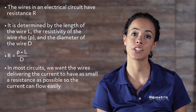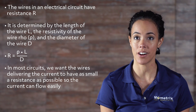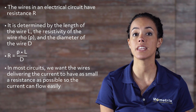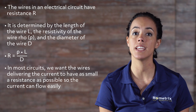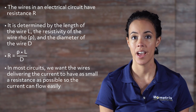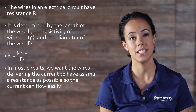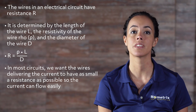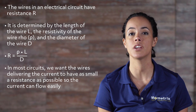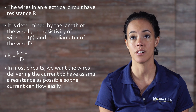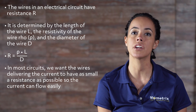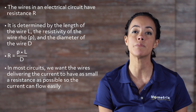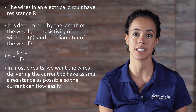The wires in an electrical circuit have resistance, R. It is determined by the length of the wire, L, the resistivity of the wire, Rho, and the diameter of the wire, D, through the equation R equals Rho times L divided by D. In most circuits, we want the wires delivering the current to have as small a resistance as possible, so the current can flow easily.